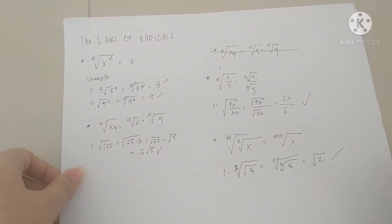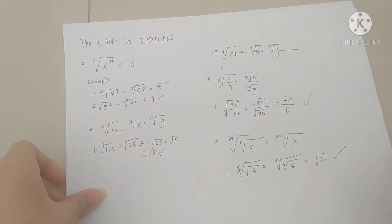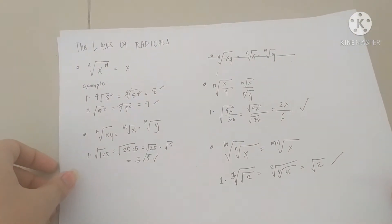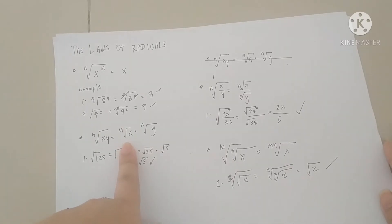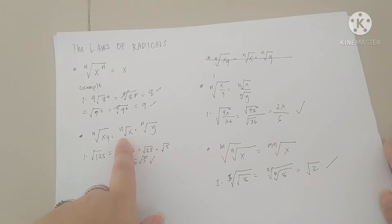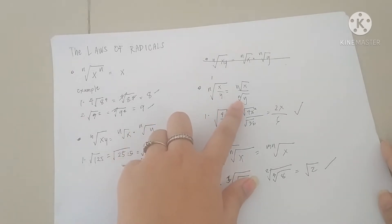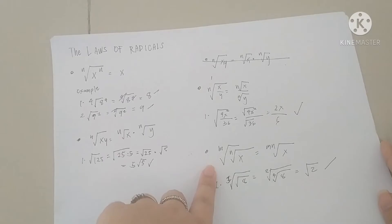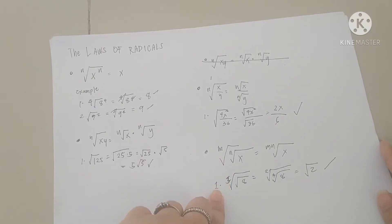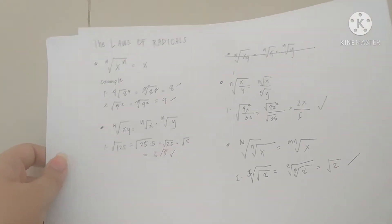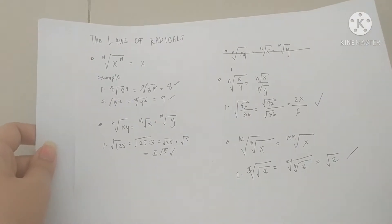So now, I'll teach you the basics first — the laws of radicals. Now, we're going to proceed to simplifying using laws of radicals. We're going to use this law: the n-th root of xy is equal to the n-th root of x times the n-th root of y. And this law: the n-th root of x over y is equal to the n-th root of x over the n-th root of y. And the third one: the n-th root of the m-th root of x is equal to the mn-th root of x. So those three are the important ones we're going to use in simplifying radical expressions.